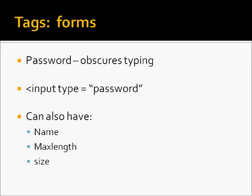A password input obscures typing, usually by showing asterisks. To do this, you'd have input type equals password and a close angle bracket. You can also have the following properties: name, max length, and size. These are exactly the same as the input text type.